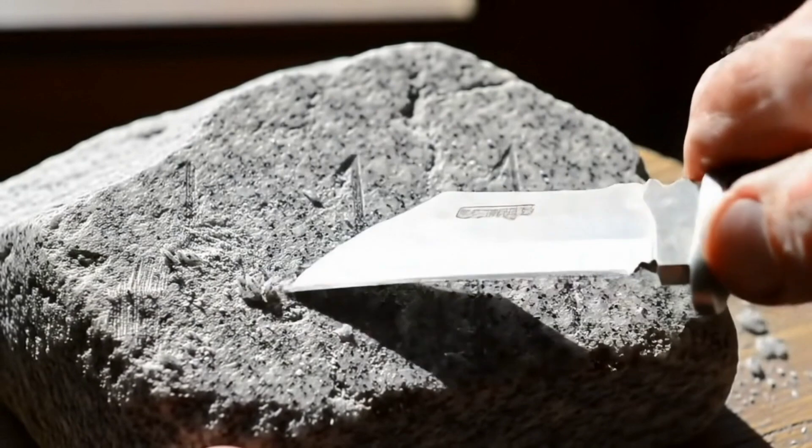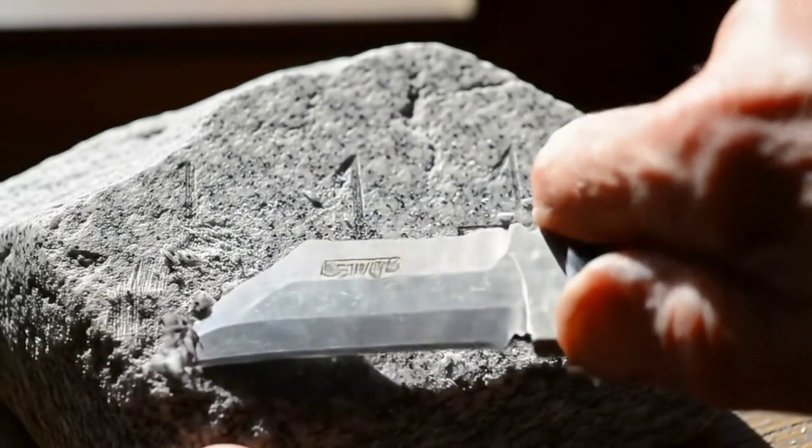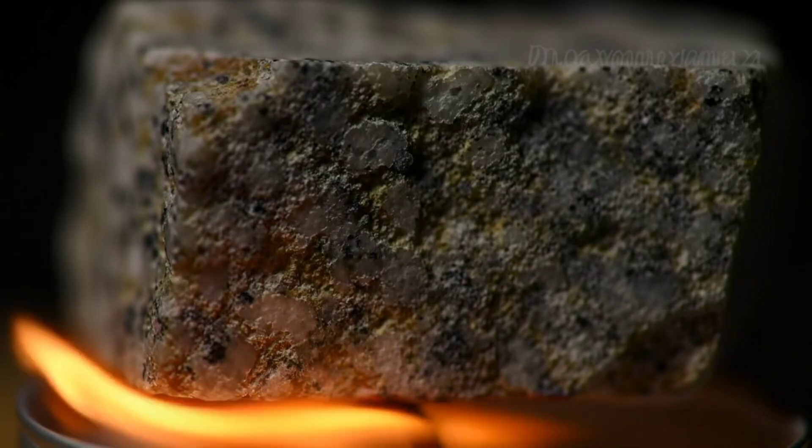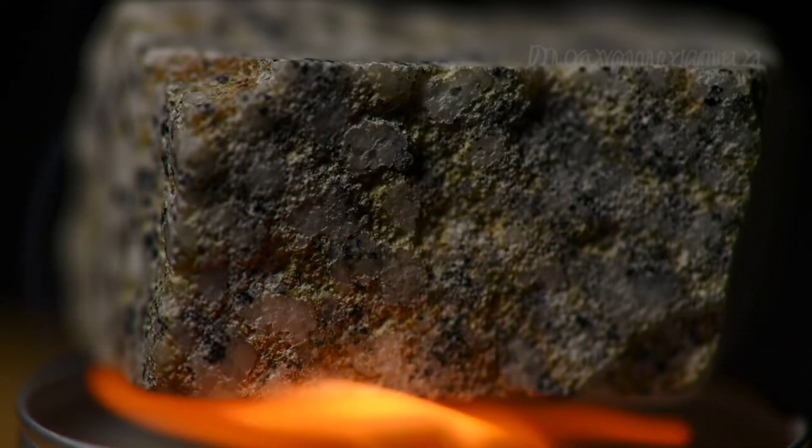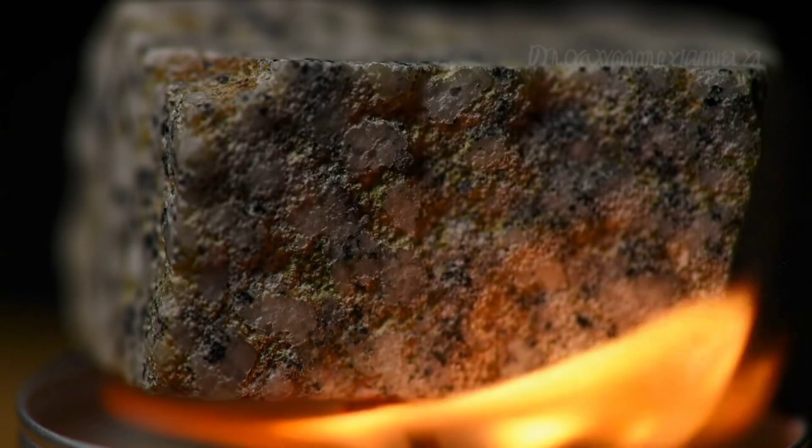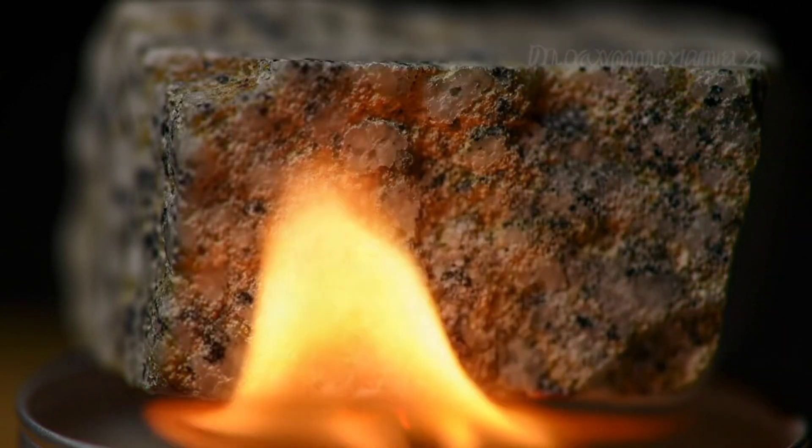Finally, a new method is the spark test when cutting or grinding. If you scrape a small piece of the rock on a metal surface, an iron meteorite often produces distinctive metallic sparks, helping you identify it easily.